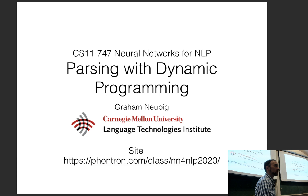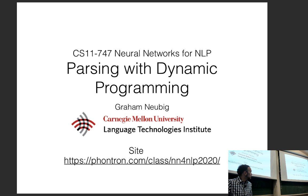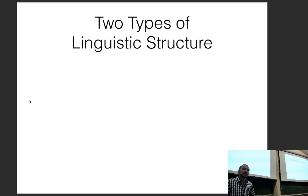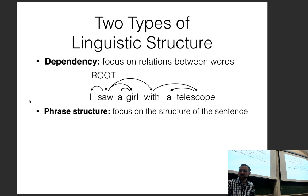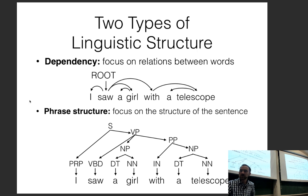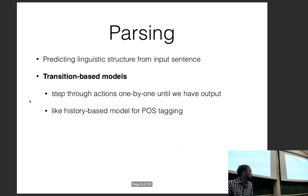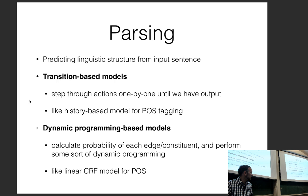This lecture covers parsing and generation of trees with dynamic programs. We have two types of linguistic structure: dependency structure, which focuses on relations between words, and phrase structure, which focuses on the phrase-level structure of a sentence. Parsing is predicting linguistic structure from an input sentence. Last time we discussed transition-based models; this time we focus on dynamic programming-based models, analogous to the CRF model for part-of-speech tagging.